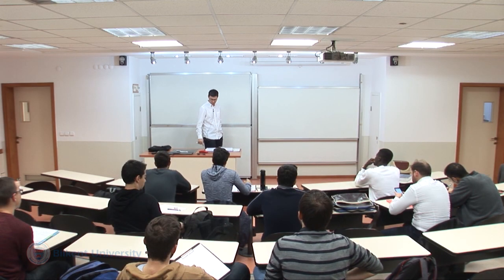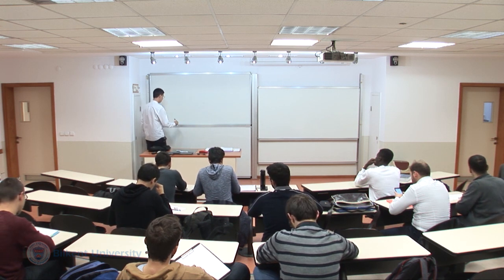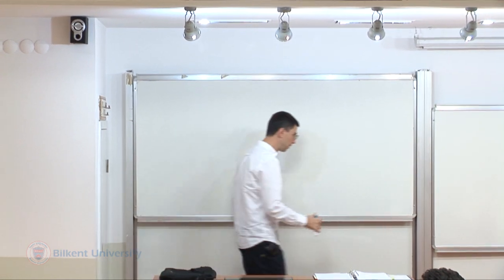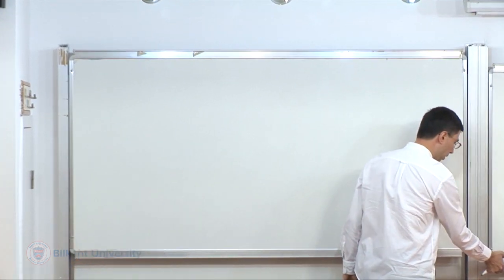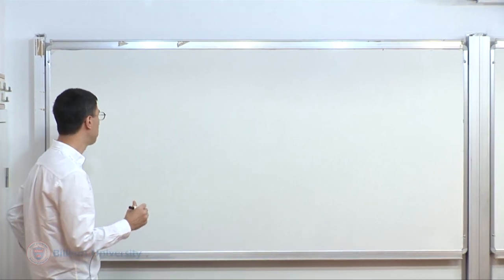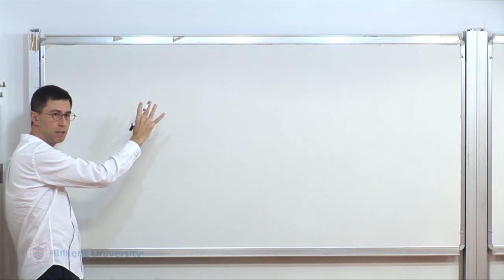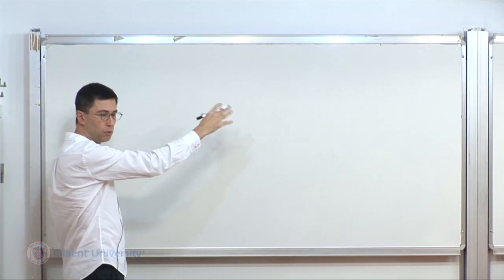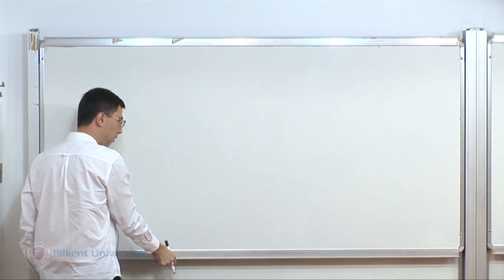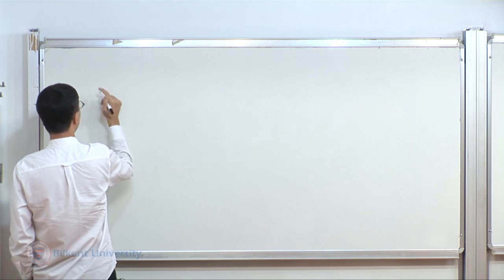Let's proceed with balance laws. Last time we covered the mass balance. Overall, we're going to cover three: the mass balance, the linear momentum balance, and the angular momentum balance. Let me summarize quickly the procedure we followed for the mass balance, because that will dictate the process we are going to follow for the momenta balances.